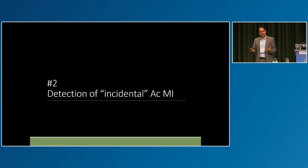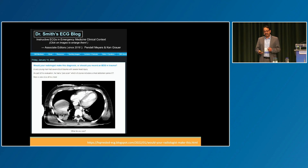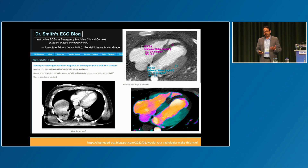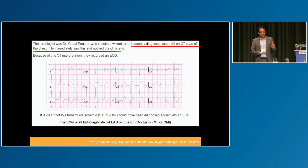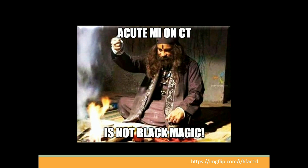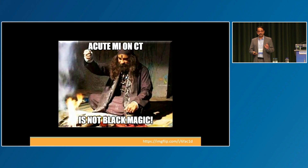I find unsuspected MIs with spectral CT on a regular basis. The next slide shows screenshots from a popular ECG blog where the author talks about a trauma patient where I diagnosed an acute MI on spectral CT based on absent iodine uptake in the LAD territory. The EKG was obtained after the CT interpretation and confirmed the acute MI. The author goes on to say that I am a wizard, but I must tell you that is not true — you do not need black magic to diagnose acute MIs on CT.